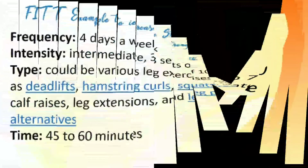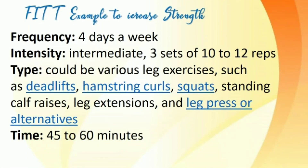For increasing strength: frequency is four days a week, intensity is intermediate at three sets of 10 to 12 reps, and the type includes various leg exercises such as deadlifts, hamstring curls, squats, standing calf raises, leg extensions, and leg press or alternatives. The time should be 45 to 60 minutes.